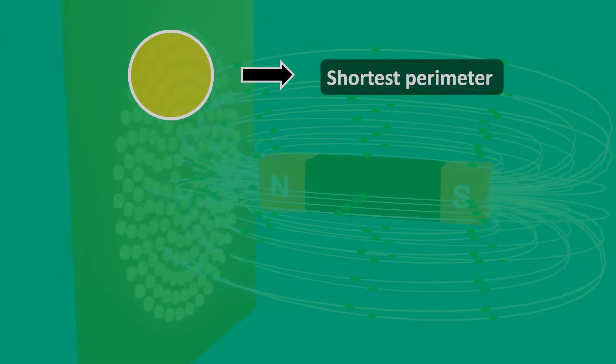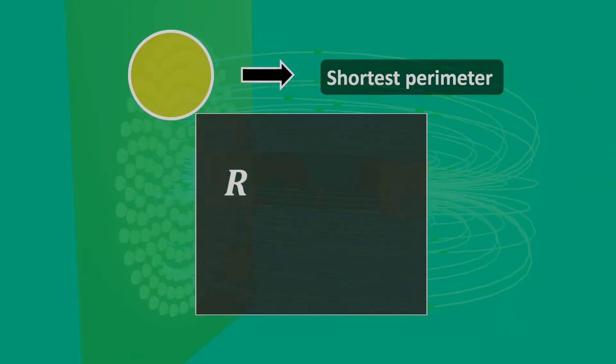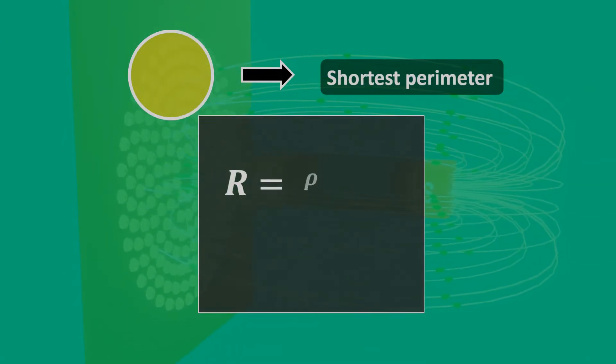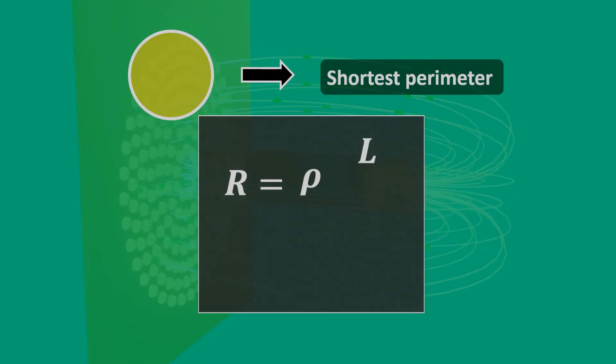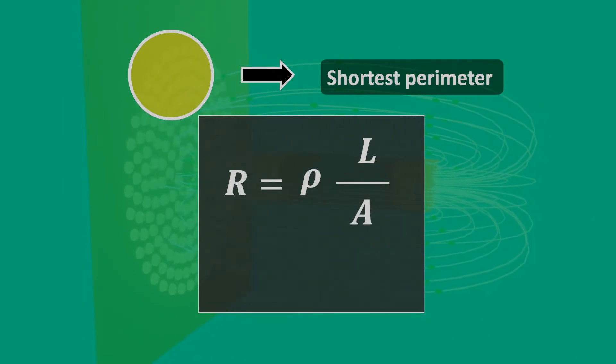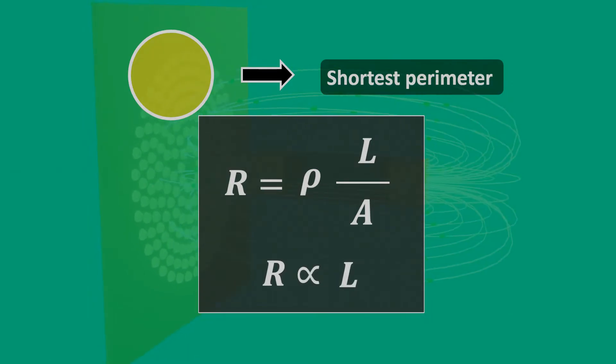And we know that resistance R equals resistivity rho into L, that is length of a conducting path, over area of cross-section A. From this formula, we can conclude that resistance R is directly proportional to length of a path from which current is flowing.